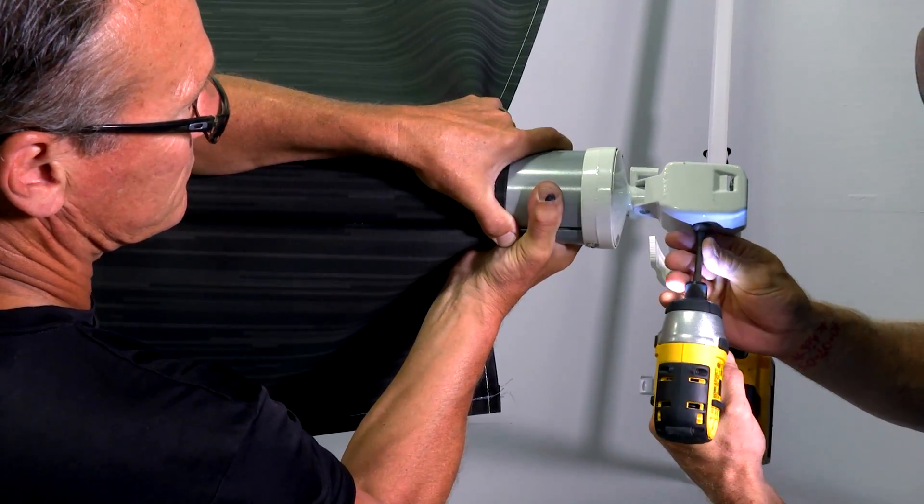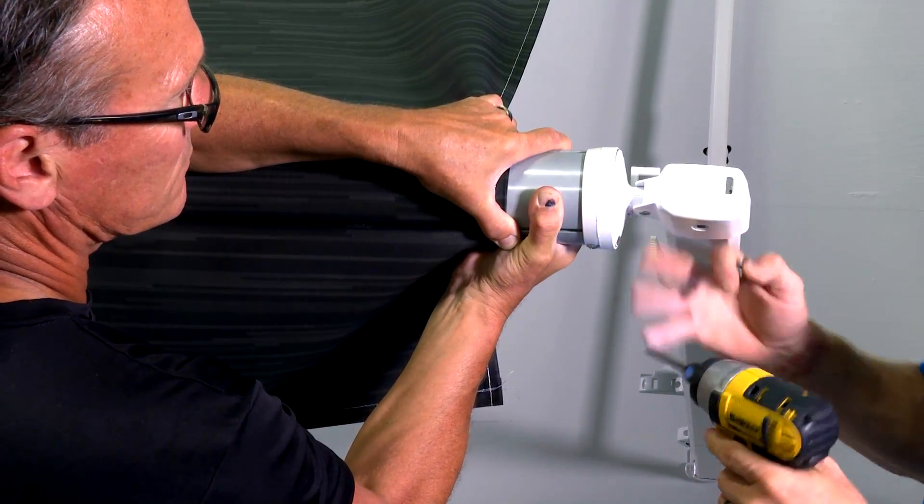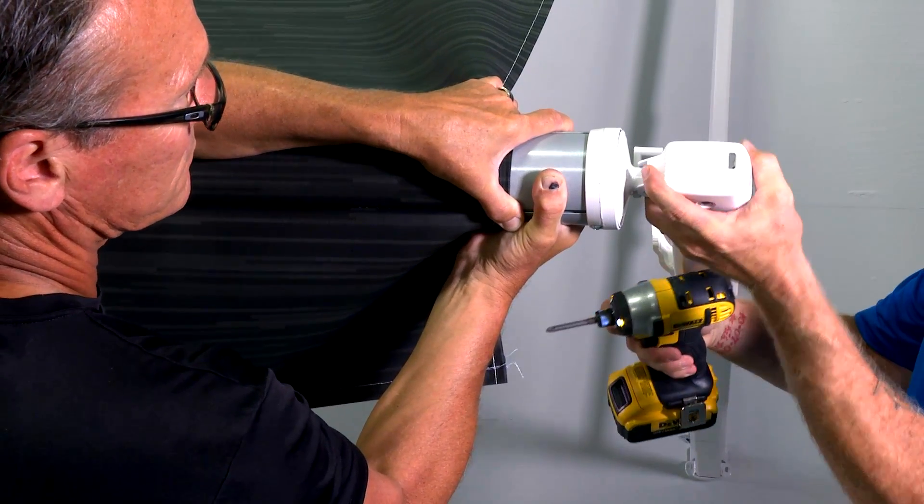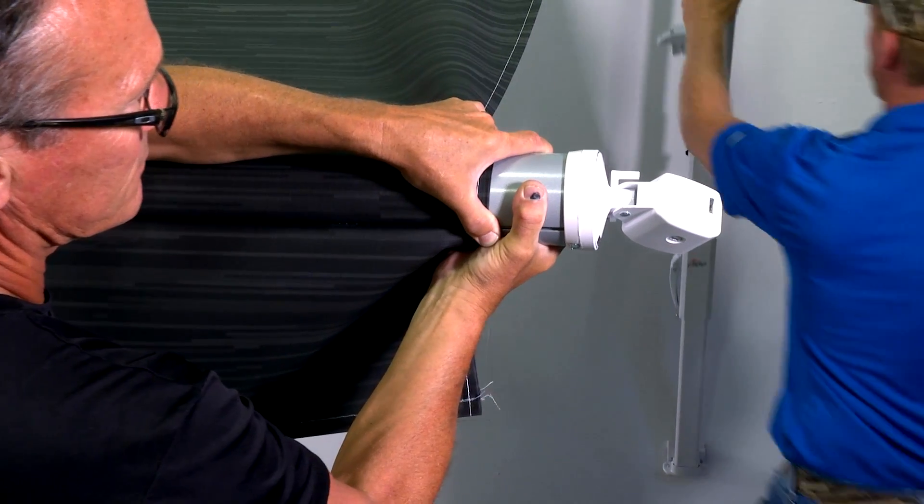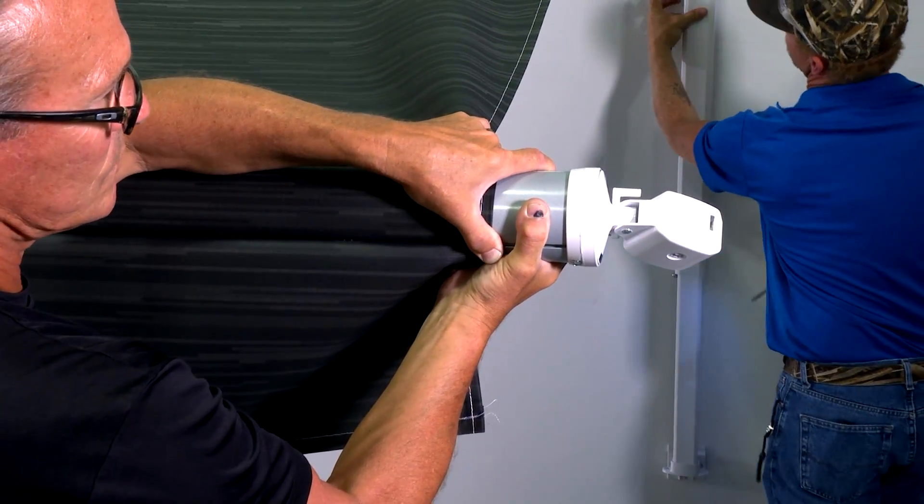With an assistant holding the roll tube, remove the screw holding the end cap to the awning arm. Lift the end cap off of the awning arm and move the arm to its travel position, and lock it in place with the travel lock.